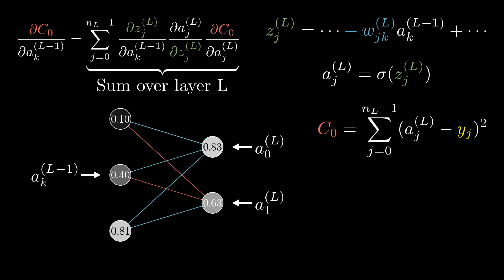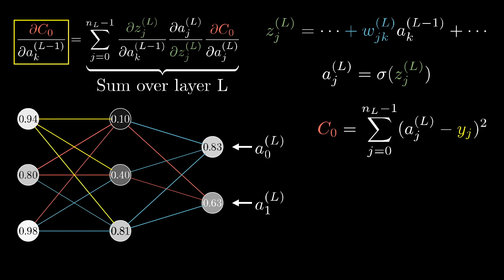And that, well, that's pretty much it. Once you know how sensitive the cost function is to the activations in this second-to-last layer, you can just repeat the process for all the weights and biases feeding into that layer. So pat yourself on the back! If all of this makes sense, you have now looked deep into the heart of backpropagation, the workhorse behind how neural networks learn.